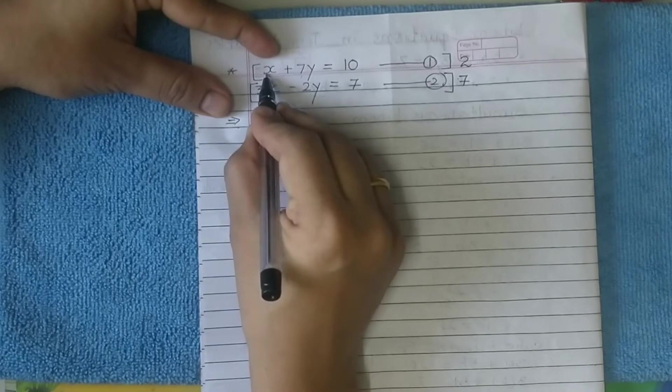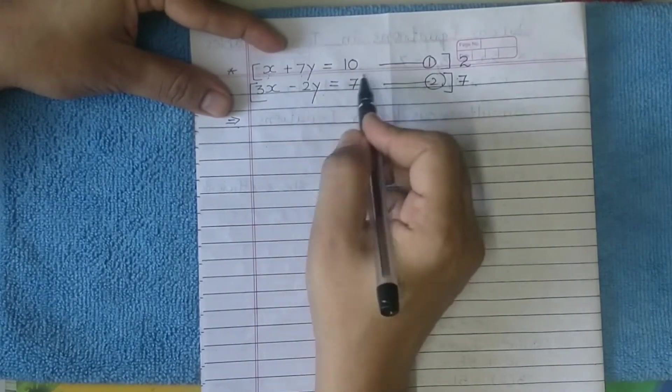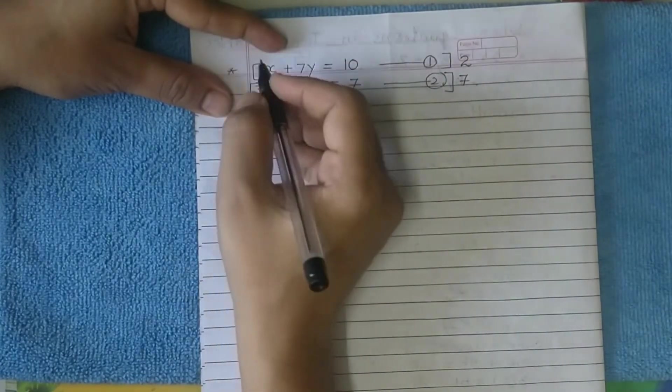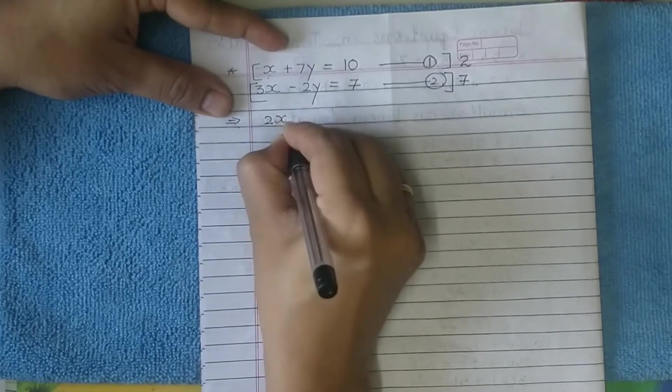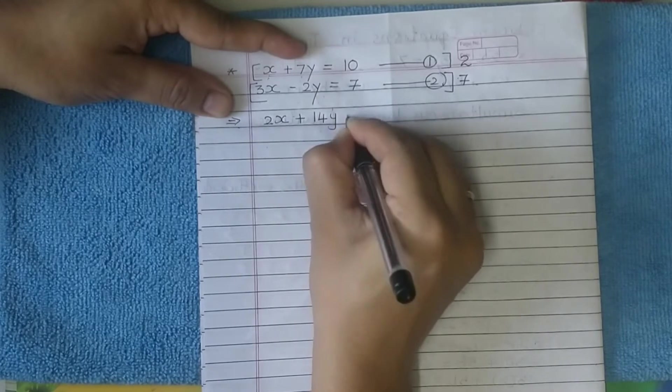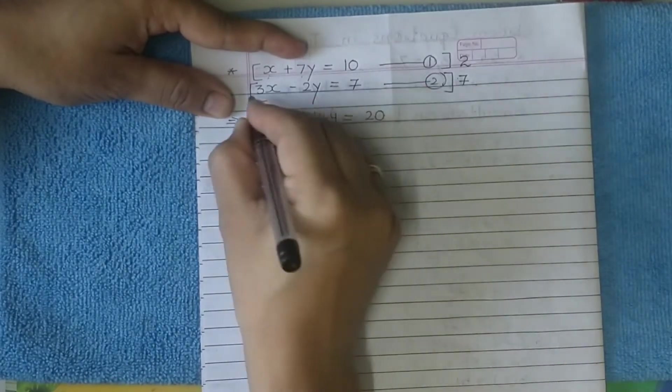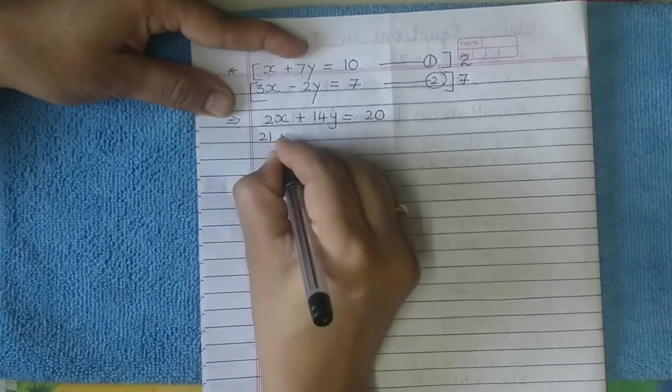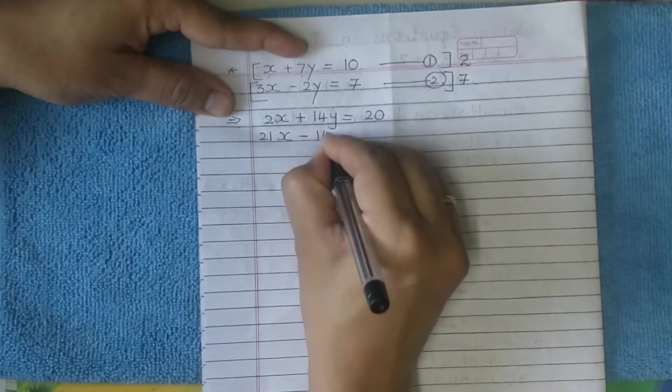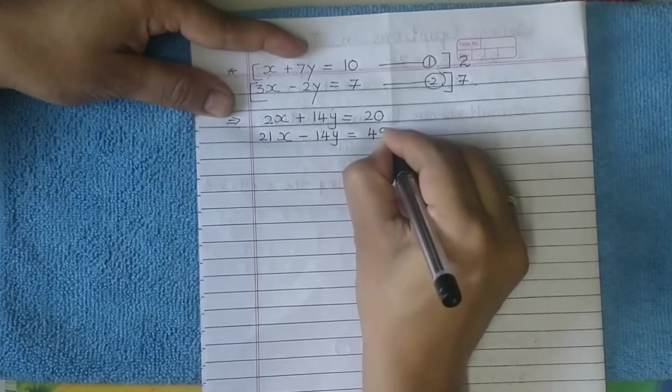Multiplying equation 1 by 2, you get 2x plus 14y equals 20. And multiplying equation 2 by 7: 7 times 3 is 21x minus 14y equals 49. Let this be equation 3 and equation 4.